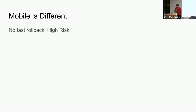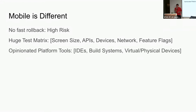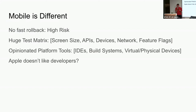Mobile is different. As the previous speaker mentioned, there's no fast rollback — you have kind of one shot to get it right. We have a huge test matrix, and on Android especially, device and API level fragmentation is huge. And then we have opinionated platform tools — every platform has its own set of tools and challenges. And I put this under here: Apple doesn't like developers. I come more from an Android background, but someday I think they will come around.